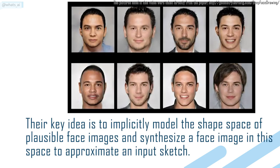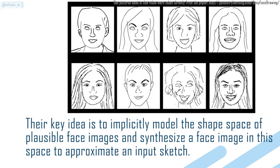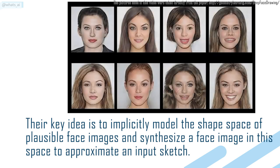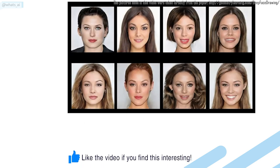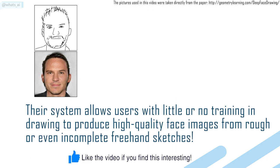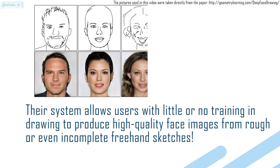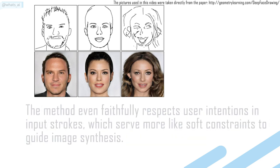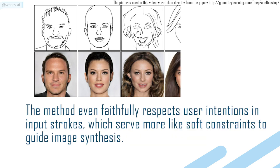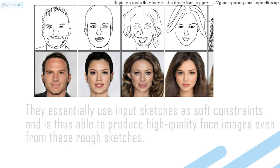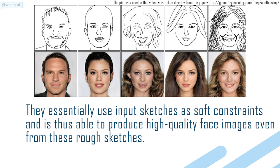Their key idea is to implicitly model the shape space of plausible face images and synthesize a face image in that space to approximate an input sketch. Their system allows users with little or no training in drawing to produce high quality face images from rough or even incomplete freehand sketches. The method faithfully respects user intentions, with input strokes serving more like soft constraints to guide image synthesis.